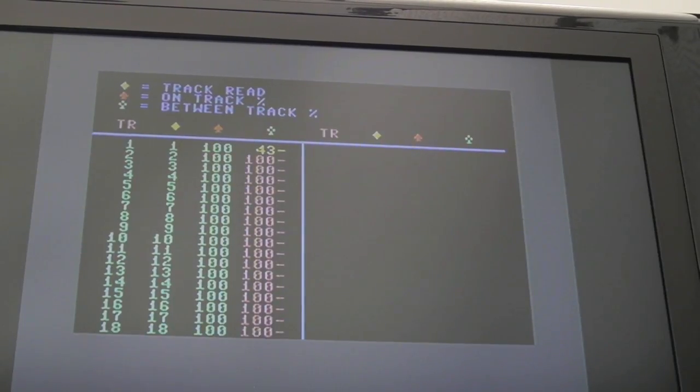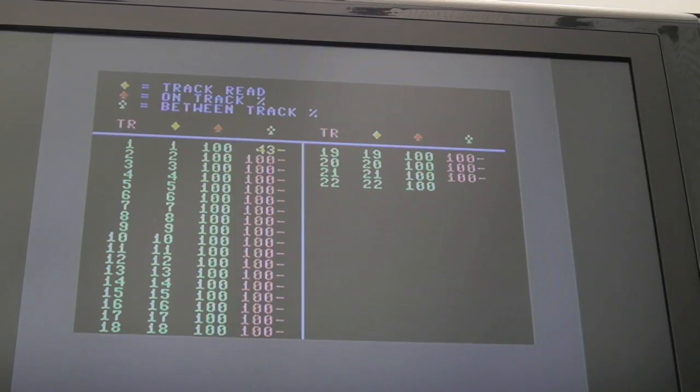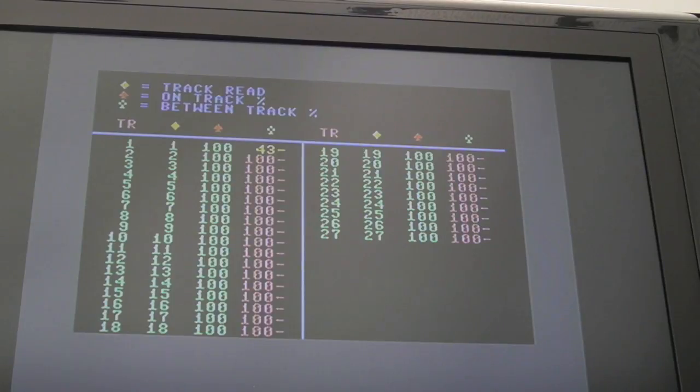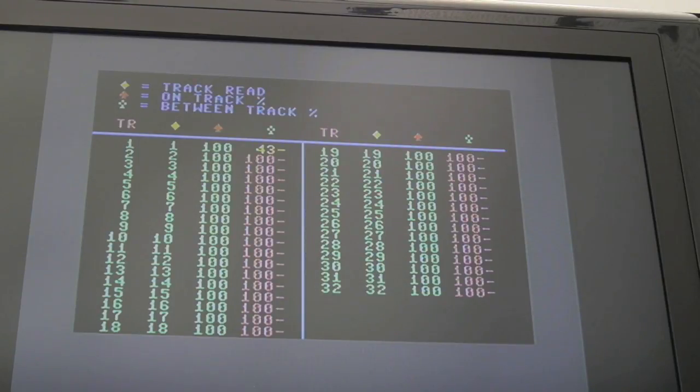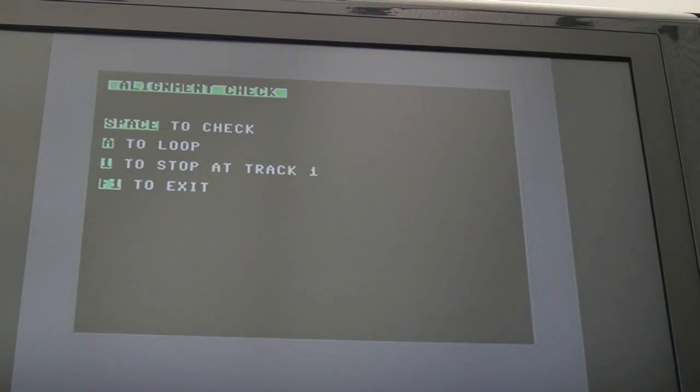One of the interesting things with this Alps drive compared to the Mitsumis - you'll notice there that the alignment is a bit variable in terms of results. Now bear in mind I formatted this disc on this drive, so you'd kind of expect 100% on everything. But you'll see it probably dipped towards the end of the disc - you saw that little dip there at the start. It could be the quality of the disc I'm using here. I suspect it's probably having a bearing on it, actually, because a previous disc I used was giving worse results. This disc seems to be pretty good.